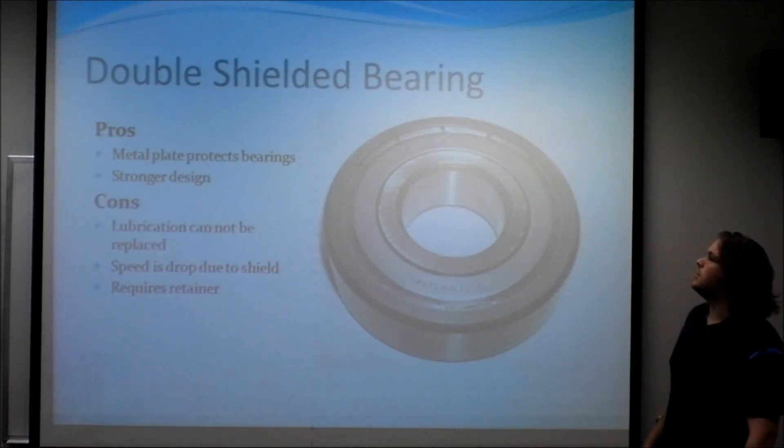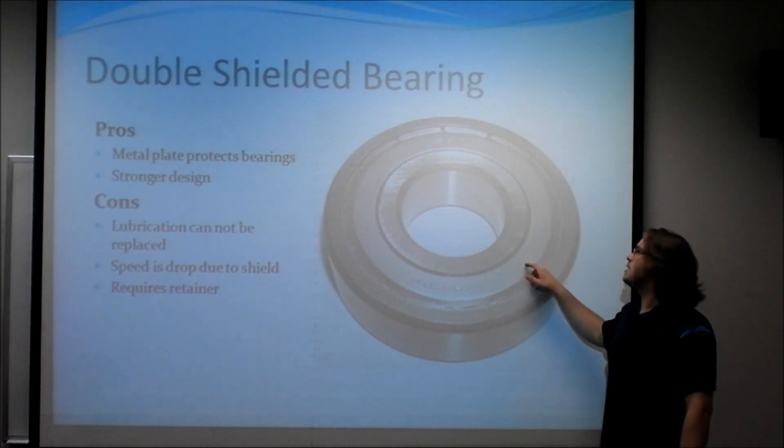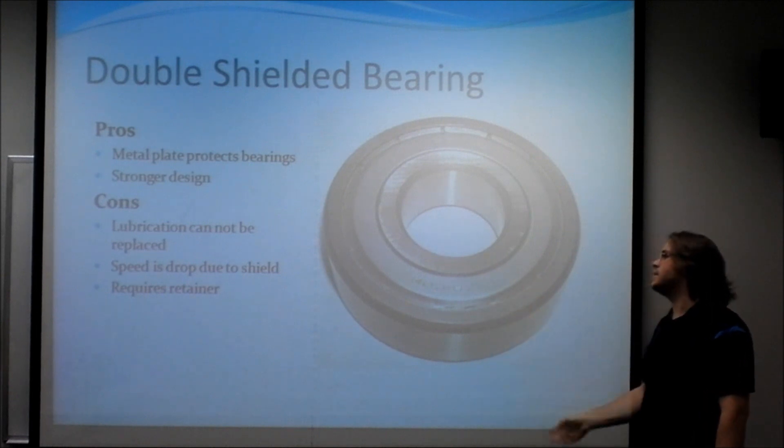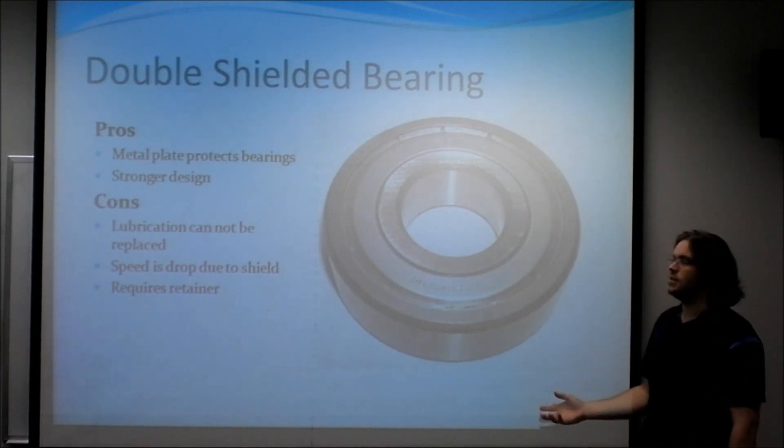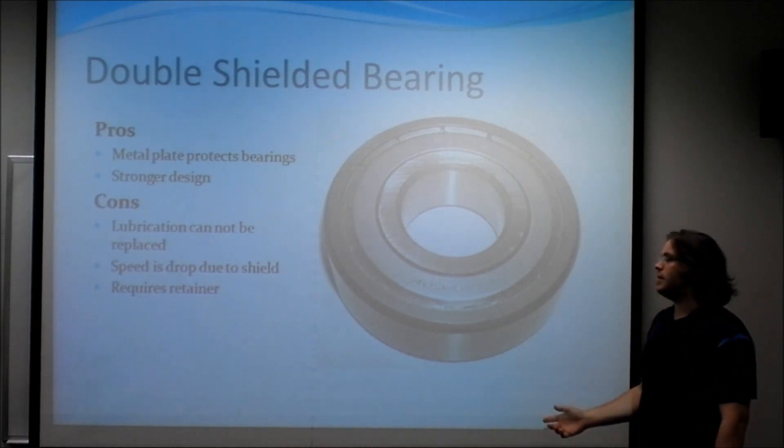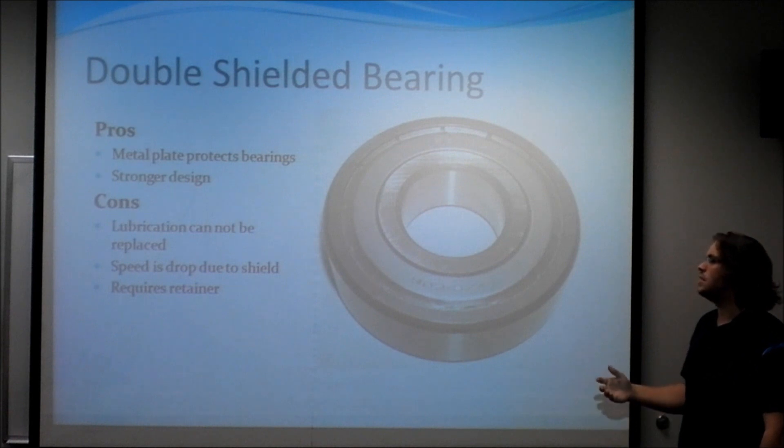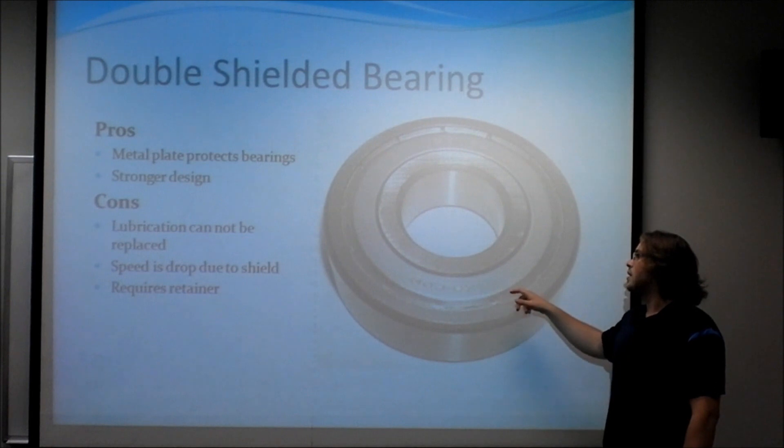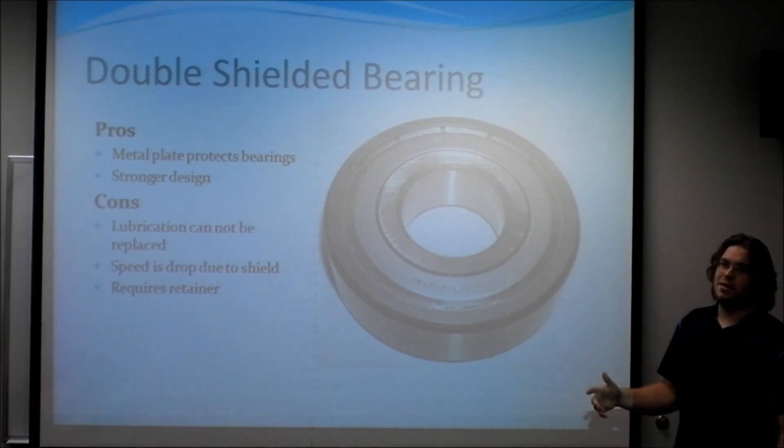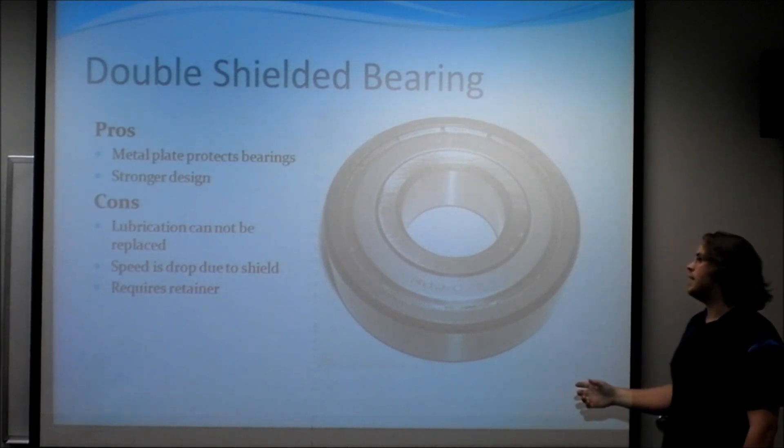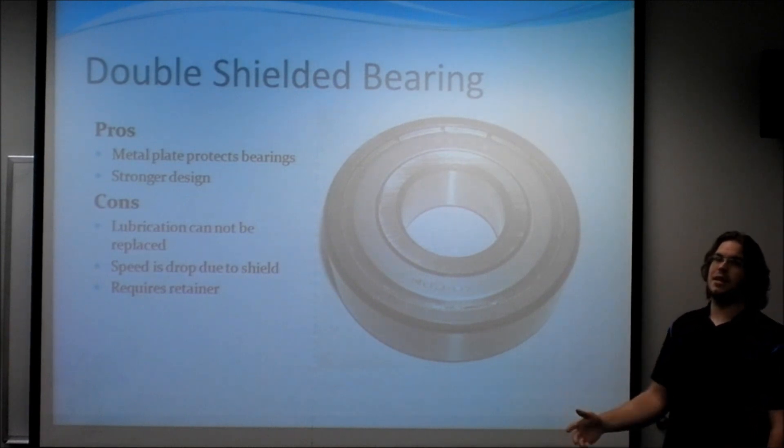The next one is the double shielded bearing. Similar to the open bearing, but instead of the bearing being exposed, there's a small metal plate that protects both sides. This gives it a more robust design. It doesn't allow material to fall into it. The one drawback is lubricant can't be replaced and the speed is dropped drastically due to the actual shielding. Another big concern is that if the bearing is exceeded in temperature or in speed, the lubricant inside will start to burn up and that could actually drastically degrade the life because the burnt lubricant is not inside.